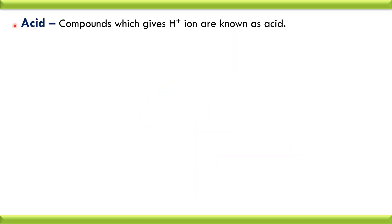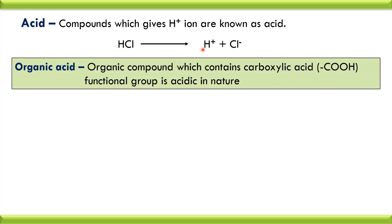First, let us see what is meant by an acid compound. Compounds which give H⁺ ions are known as acids. For example, hydrochloric acid, HCl, upon ionization gives H⁺ ion and chloride ion. As it gives H⁺ ion, HCl is acidic in nature. Thus, any compound which gives H⁺ ion is considered as an acid. In the case of organic compounds, the organic acid is one which contains an acid functional group, that is, the carboxylic acid functional group.